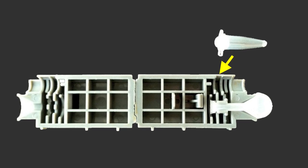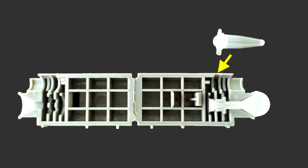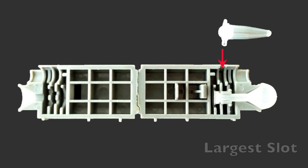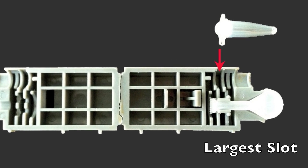Place the reaction tube into the amplicon cartridge. Be sure to place the hinge of the tube cap into the largest slot adjacent to the buffer bulb.